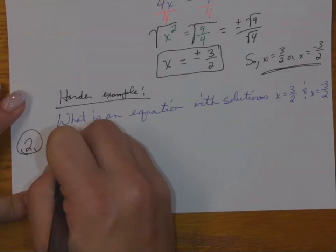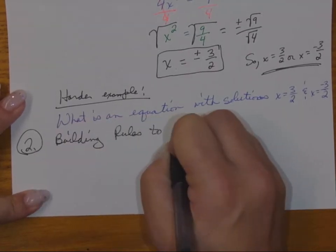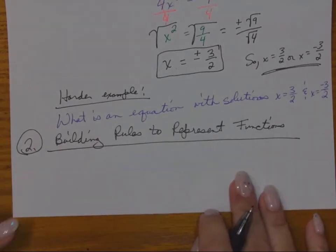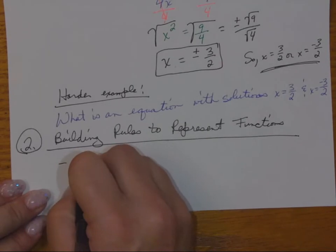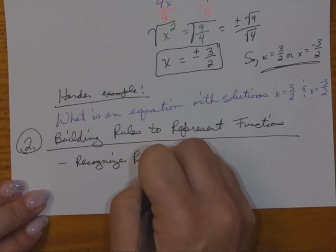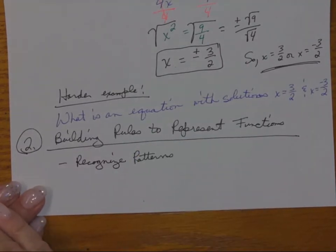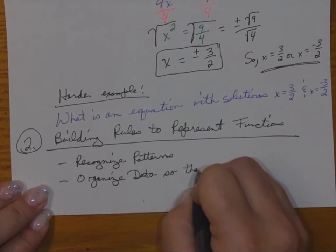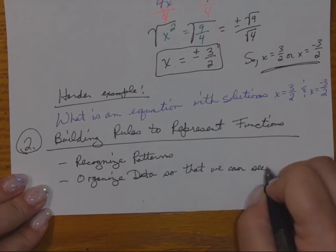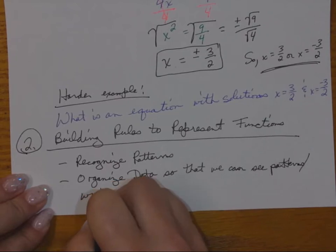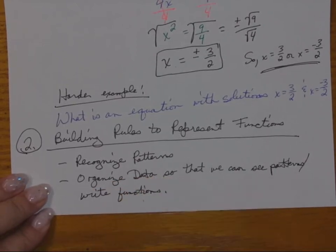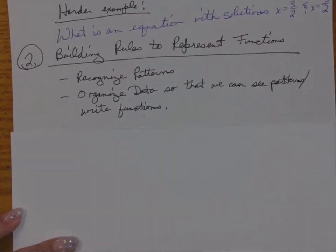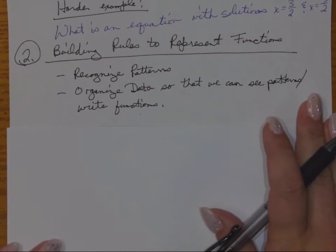The second building block is building rules to represent functions. This means we're going to recognize patterns and organize our data in such a way that we can see those patterns and write functions from them. Maybe that means using a table or a drawing — there are different ways — but we're going to build something so that we can get a function out of it. Some of us will struggle as we start to create these things.